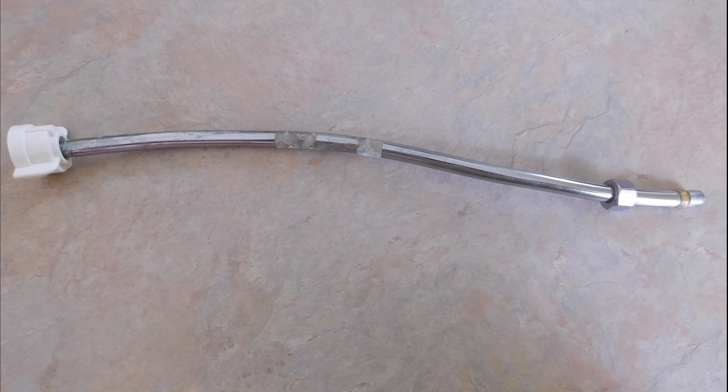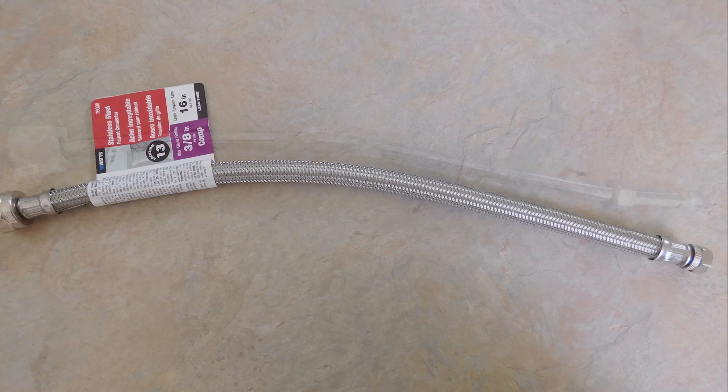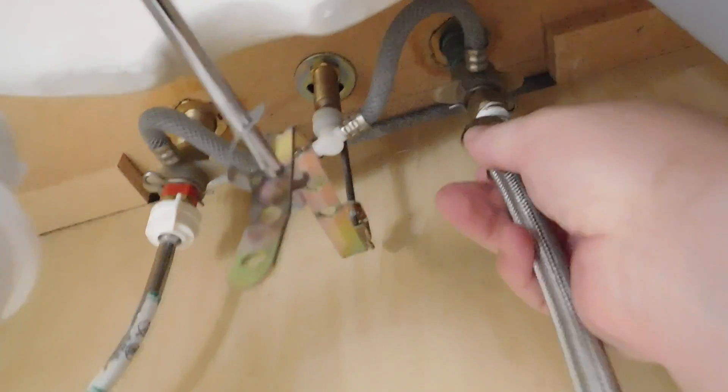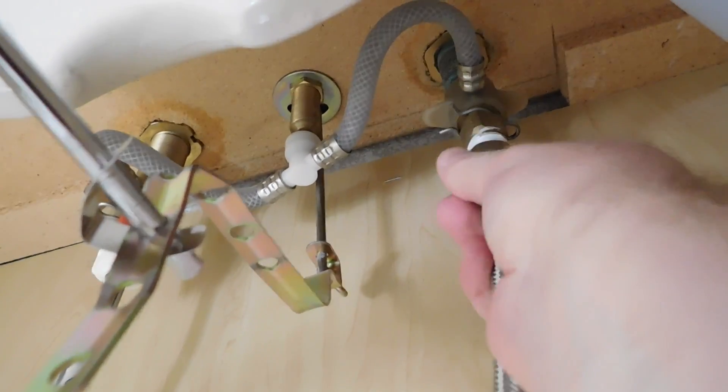I'll be replacing the old line with a new braided line. This line has a rubber grommet at each end so it does not require thread tape, but it won't hurt to leave the old thread tape on the threads.